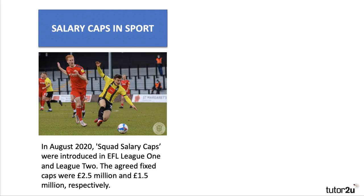Another really good topical example is the salary cap. Back at the start of last season in August 2020, squads in the English Football Leagues 1 and 2, including my own team Harrogate Town — pictured here in yellow — introduced an agreed fixed salary cap: £2.5 million for League 1 and £1.5 million for League 2. That cap includes basic wages, taxes, bonuses, image rights, agents' fees, and basically any other expenses paid directly or indirectly to all registered players in a squad.